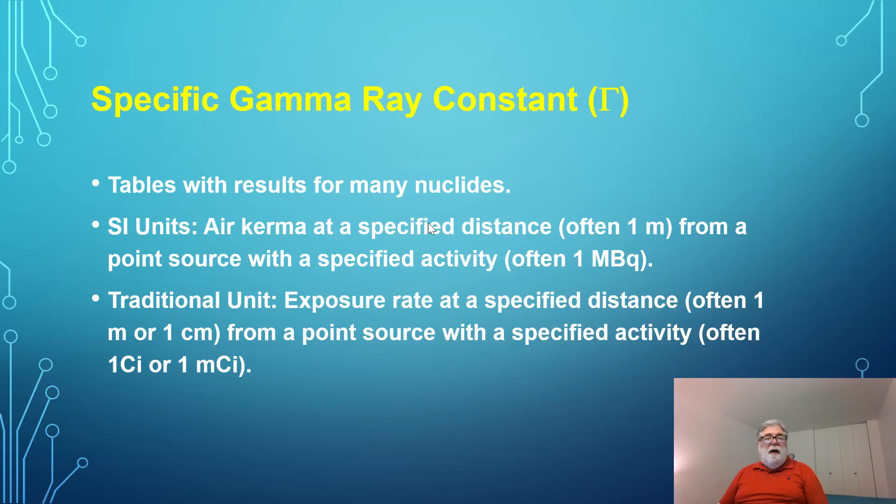I do want to point out that this air kerma rate from photon sources is a common tool used in health physics. There is a quantity called the specific gamma ray constant. It's symbolized as capital gamma. It's often called the gamma factor. There are tables with these factors for many, many nuclides. The more recent tables are in SI units. They give the air kerma rate at some specified distance, frequently one meter from a point source with a specified activity, frequently one megabecquerel. I think I did 10 megabecquerels in my example, but typically they might do one or one becquerel, and it would be a very small number.